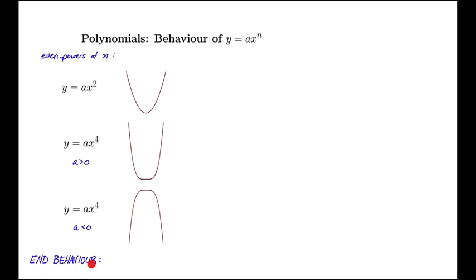So for end behavior, that is, the behavior as x goes to positive infinity or x goes to negative infinity, we see that even powers of n give us that the end behavior is both going towards plus infinity or both going towards minus infinity.